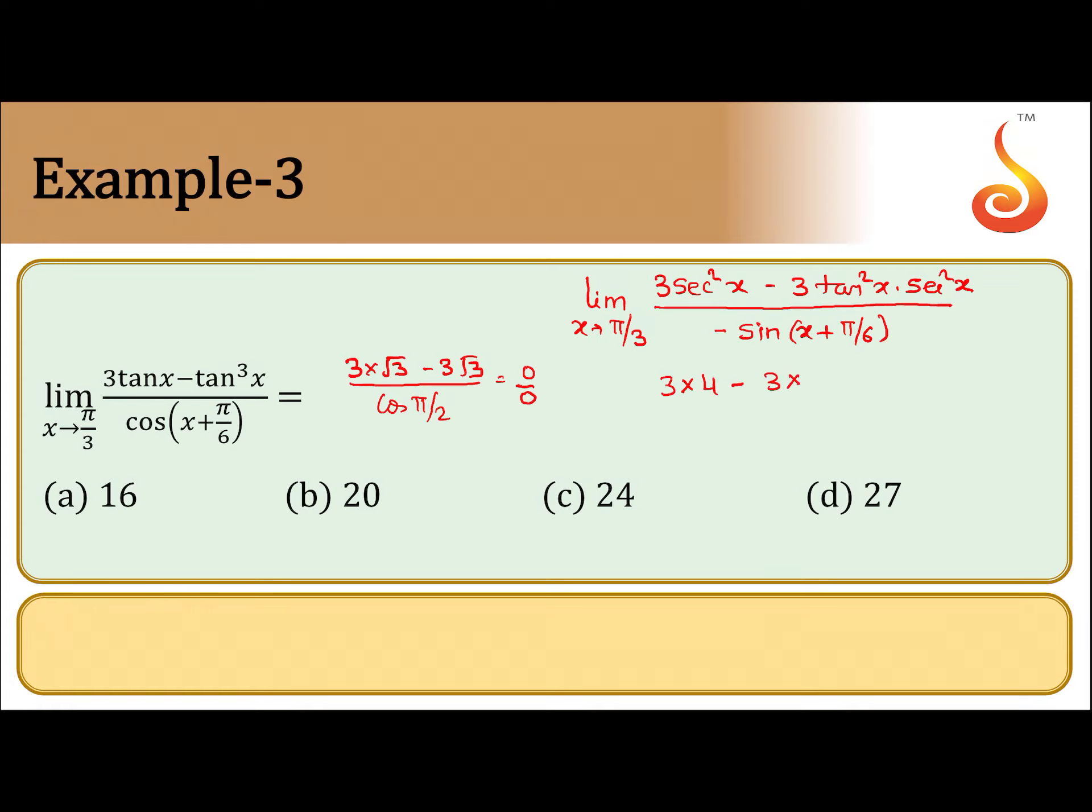So 3 secant square π/3 will give you 4 minus 3 into tan π/3, which is tan square π/3 equals √3, 3, and again 4 divided by minus 1. This will give you 12 minus 48, 4th is 12, 12th is 36, you will get minus 24 by minus 4, you get 24.